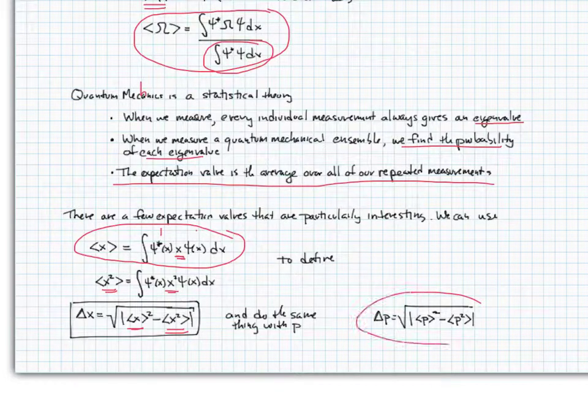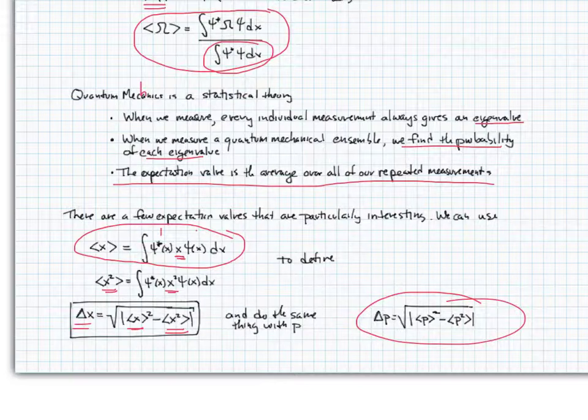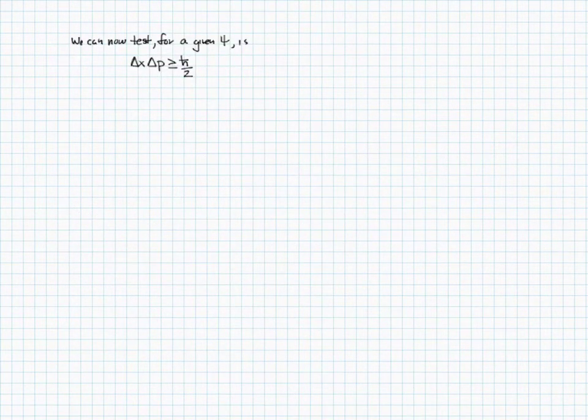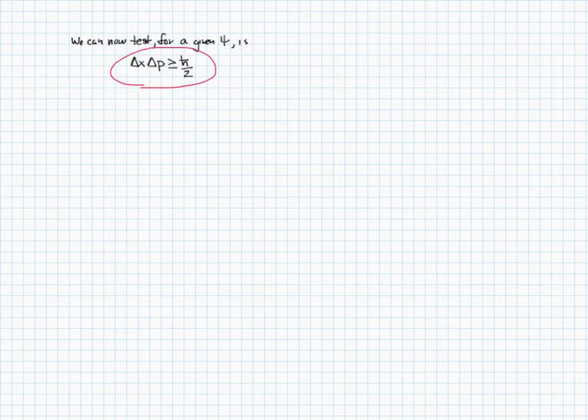Now, neither of these are terribly hard to calculate if you have Mathematica or some tool, especially. But we can use them to go ahead and find the uncertainty in x, delta x, defined as the square root of the expectation value of x squared minus the expectation value of x squared. We're going to do the same thing for momentum. So now I have a way of calculating delta x and delta p. Now, why is that useful? Because we can now test for any given wave function, does it follow Heisenberg's uncertainty principle? It better, if you find a wave function that doesn't follow the uncertainty principle, you've either made a mistake or you're about to win a Nobel Prize. I'd probably go with the mistake.